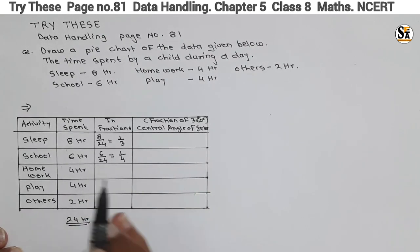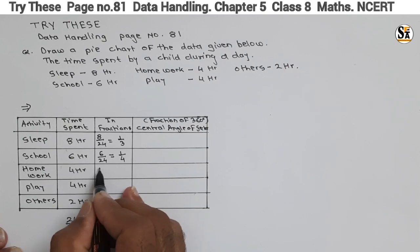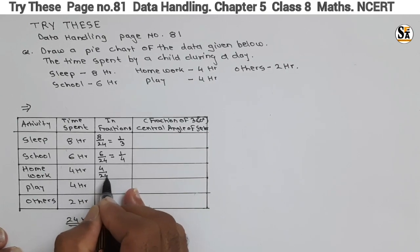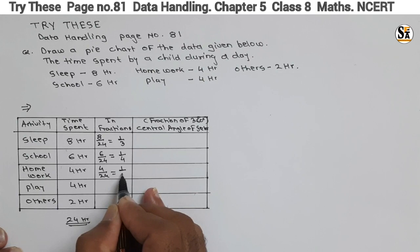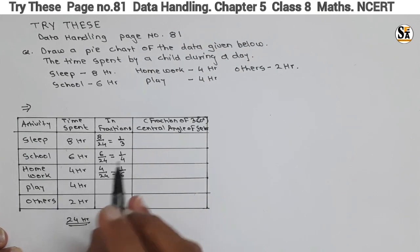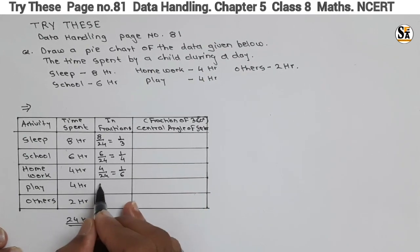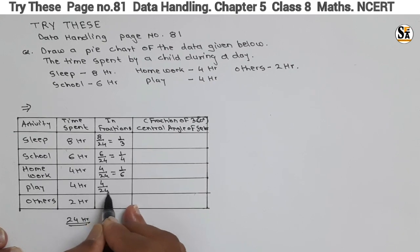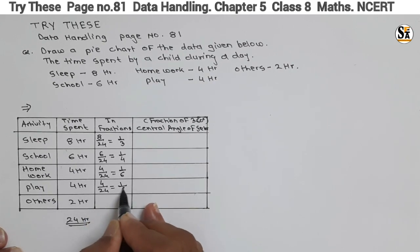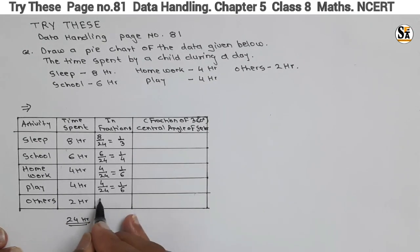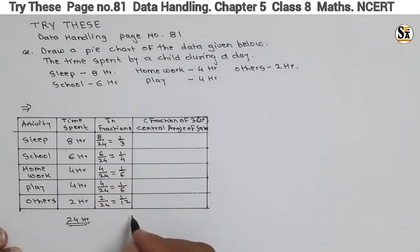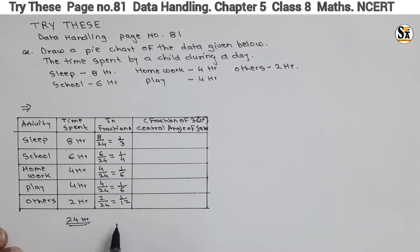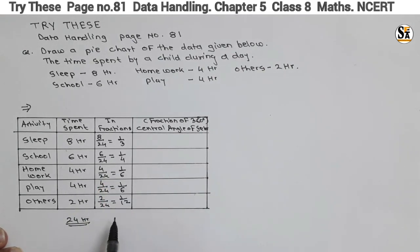For play: 4 by 24, which is also 1 by 6. For others: 2 by 24, which equals 1 by 12. If we add all these fractions we will get 1. That is the condition — the summation of all fractions must equal 1.